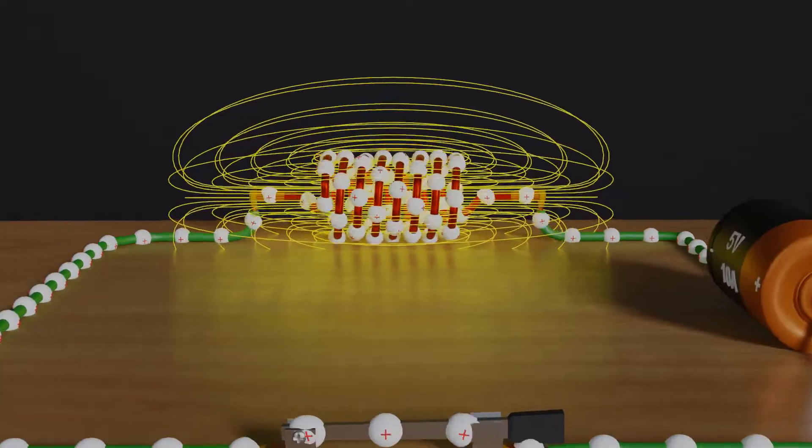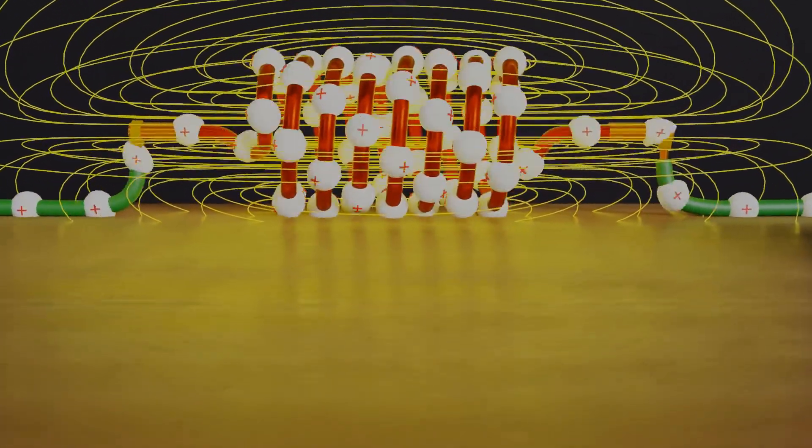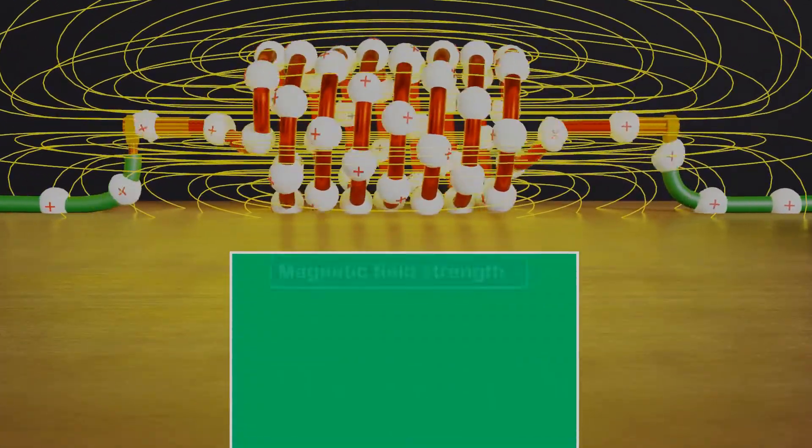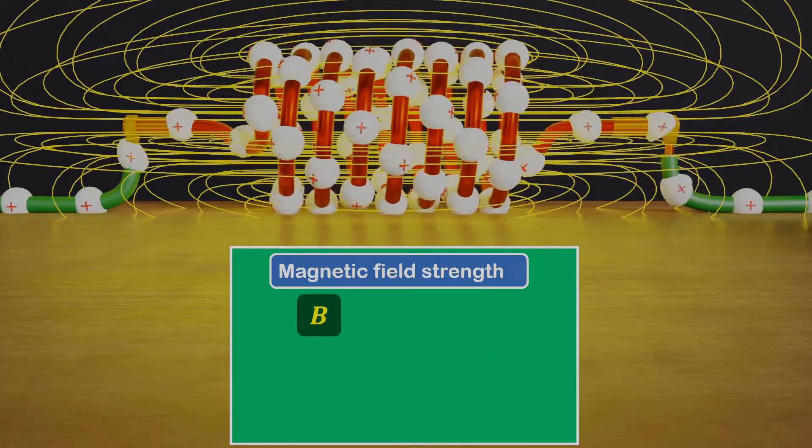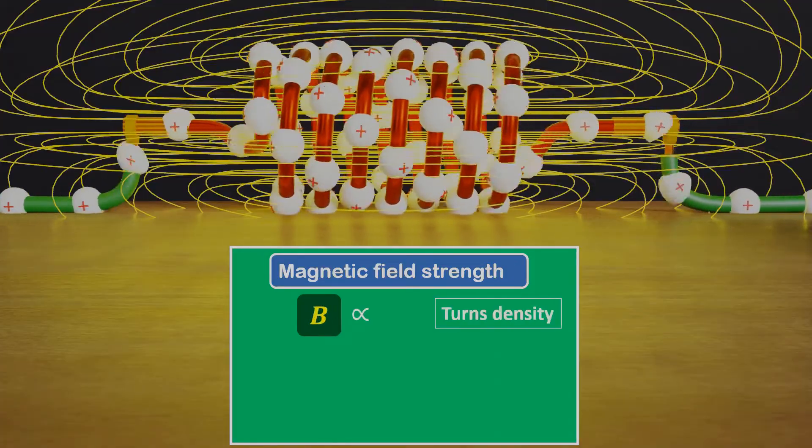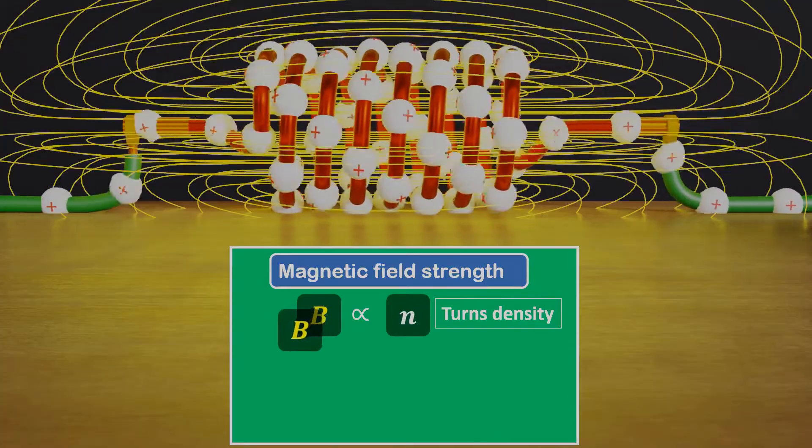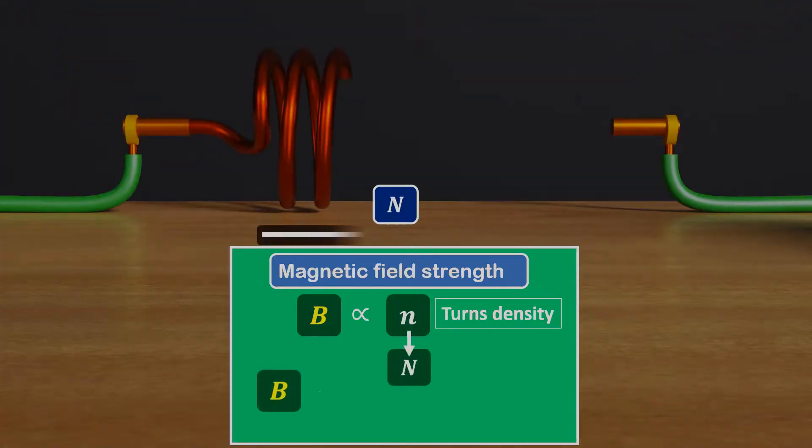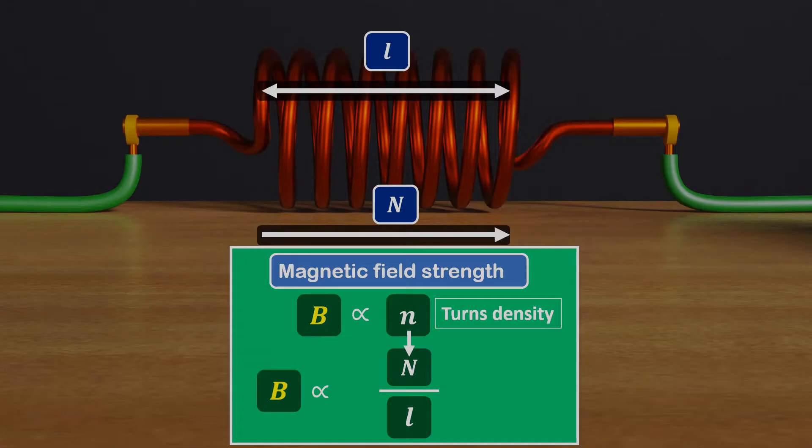Now let's find out what will happen with the coil. We have already studied that magnetic field strength B of such a coil or solenoid is directly proportional to turns density small n, that is number of turns N per unit length L, and current I.